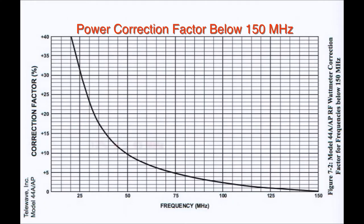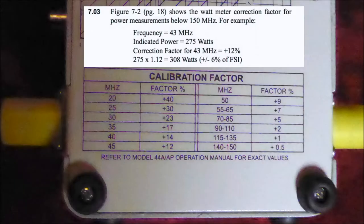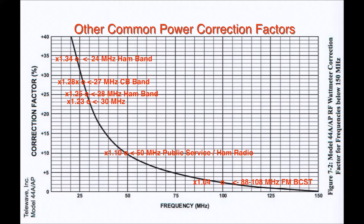If we want to take a power measurement at 43 megahertz, that gives us on the line here 12%, so 1.12 is what you multiply by. Here we have 43 megahertz. We get 275 watts on the meter. The correction factor is 1.12, which gives us 308 watts, and that's plus or minus 6% of the full-scale indication.